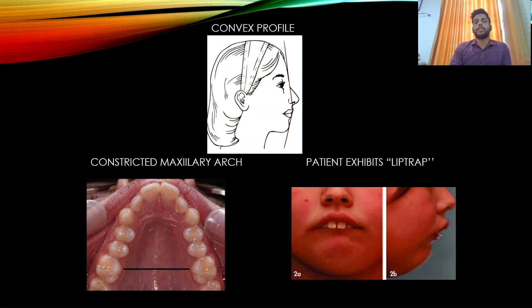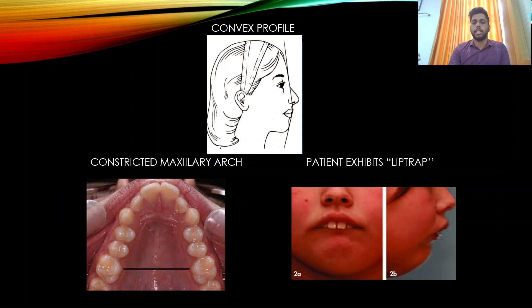In Class 2 Division 1, the patient presents with a convex profile, a constricted maxillary arch, and exhibits a lip trap due to retrognathism of the mandible.